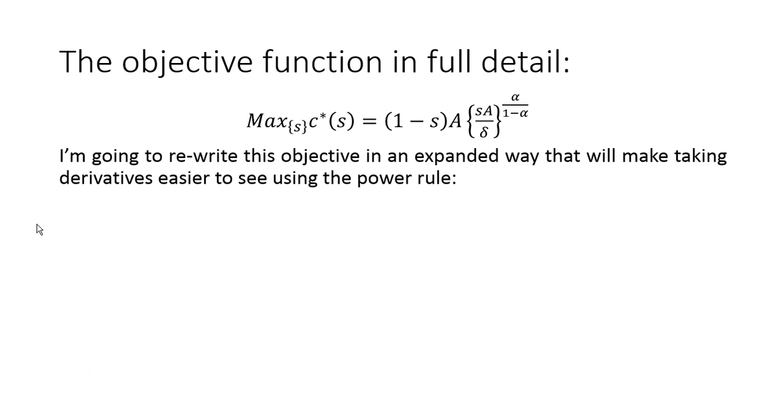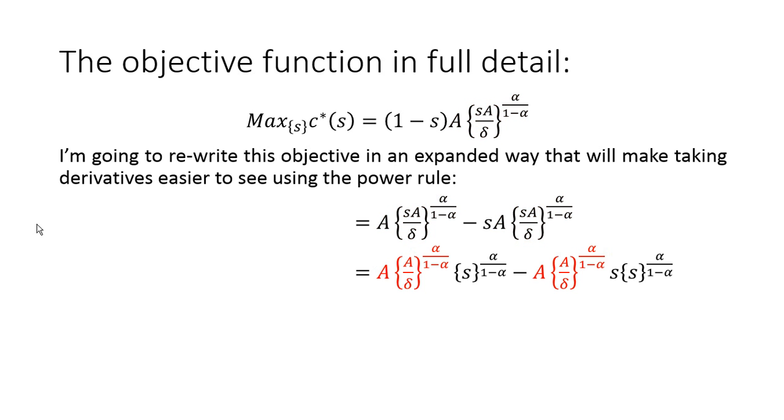The first thing I'm going to do is distribute the term in red here into this 1 minus s term. I'm going to just rewrite the objective function a little bit. That will make it easier to take derivatives later, because I know a lot of people are comfortable with just using the power rule as opposed to maybe the chain rule or the product rule. So I'm going to distribute that term in red into the 1 minus s. And then the next thing I'm going to do is factor those two terms in red in that second line there.